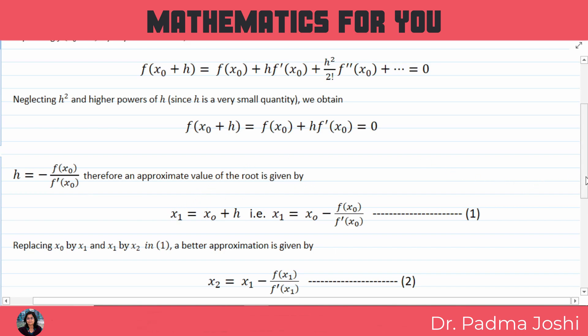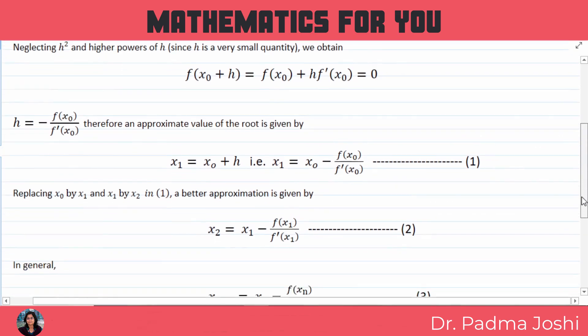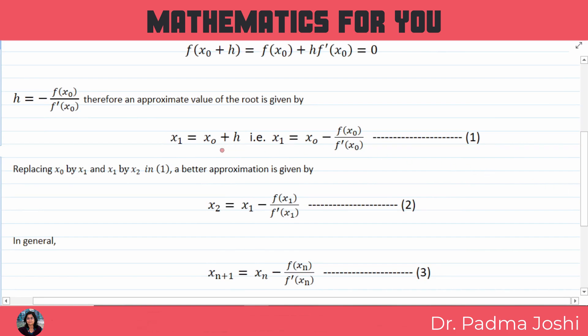Because we have the exact root of x1 is equal to x0 plus h. Aur hum h ki value yahan pe find out kar chuke hain, to x0 minus h ki yeh value yahan se utha ke hum yahan rakh denge to minus function of x0 upon f dash x0. Is tarah se hamein x1 ki ek value mili hai aur yeh iska pehla approximation to the root hoga. Ise humne equation number 1 se show kiya hai.